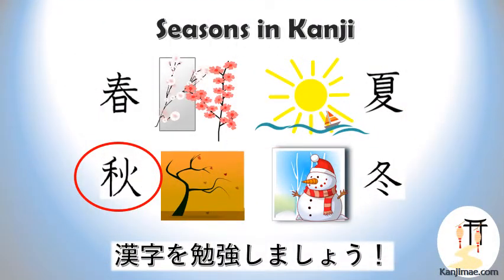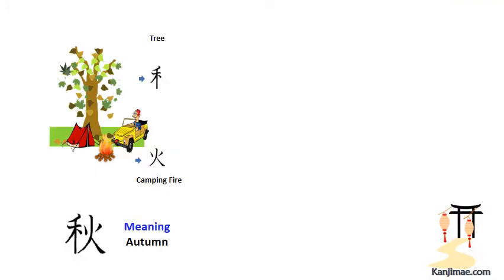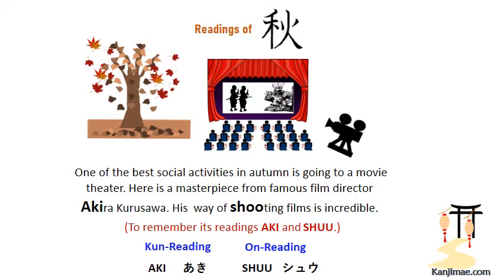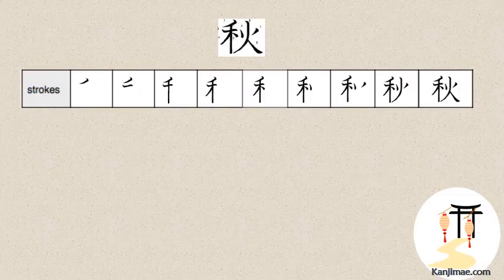Now it's time to move on to the third kanji, which means autumn. This kanji consists of two parts: the first part is a branched tree, and the second part is the fire kanji. In the picture there seems to be a preparation for a picnic or camping. Campers should pay attention so the campfire doesn't flare up, or because of the heat the color of the leaves may change to red or brown just like in autumn. You can also remember the kun reading Aki from Akira Kurosawa, the famous film director, and the on reading Shu from his shooting films — which you imagined watching in autumn.